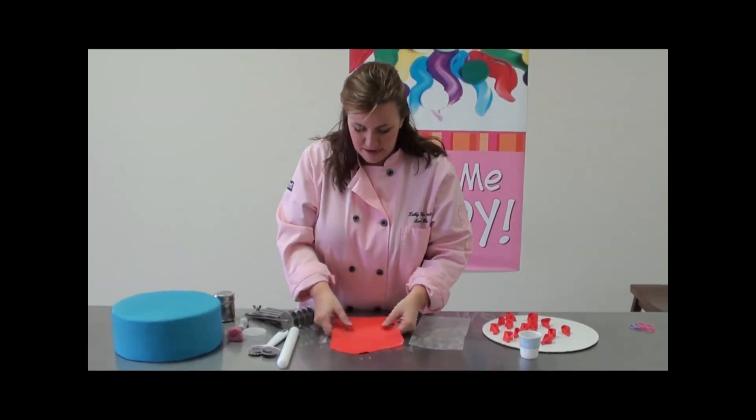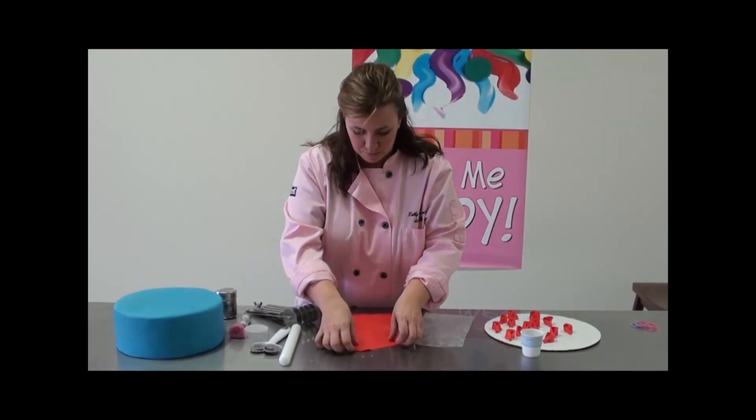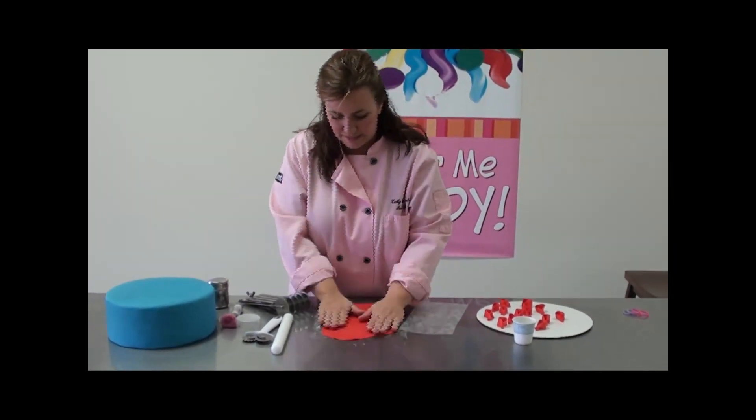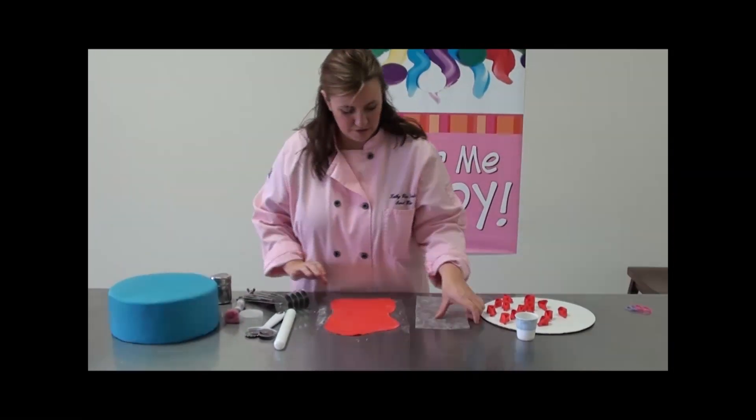I've already rolled out my gum paste nice and thin. Right before you want to emboss it, you'll pick it up a little bit and make sure it's not going to stick. I put a little bit of powdered sugar underneath that really lightly.